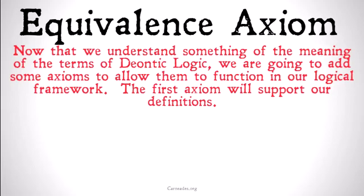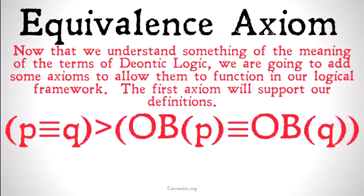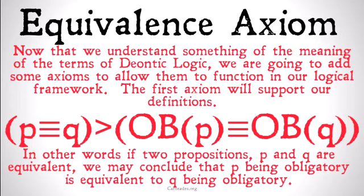The first axiom is just going to support our definitions directly. We have: P is equivalent to Q implies it's obligatory that P is equivalent to it's obligatory that Q. Basically, if two propositions P and Q are equivalent, we may conclude that P being obligatory is equivalent to Q being obligatory.